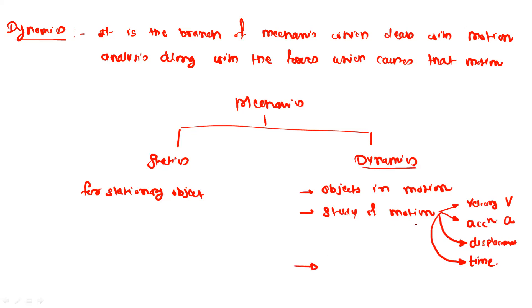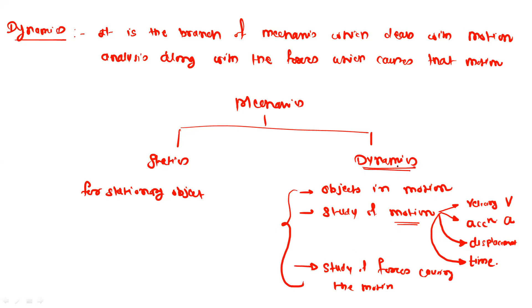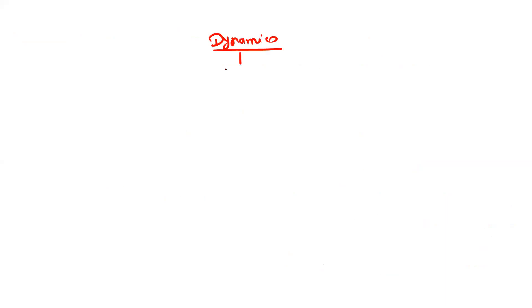Along with this motion, sometimes we will deal with the forces which cause that motion. This complete analysis of the motion along with the forces is called the dynamics part. So dynamics is again divided into two parts: the first part is called kinematics, and the second part is called kinetics.